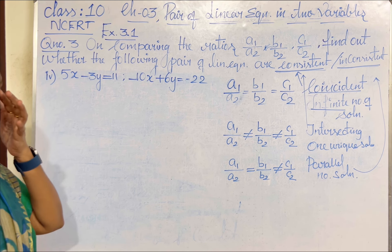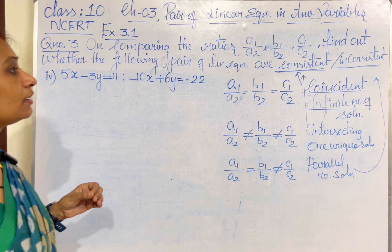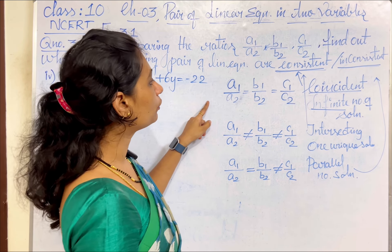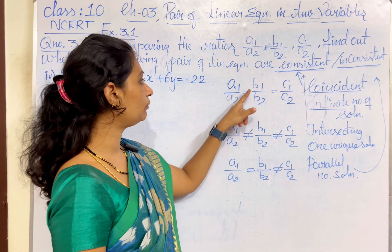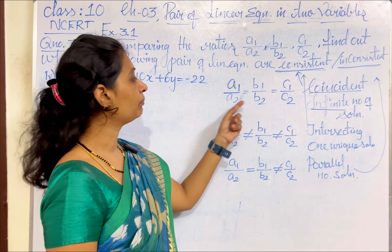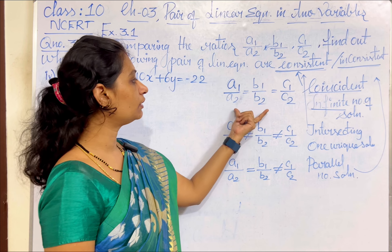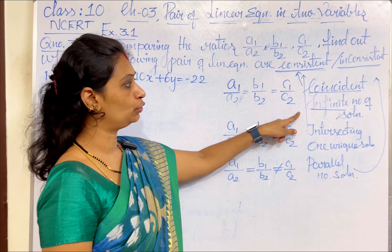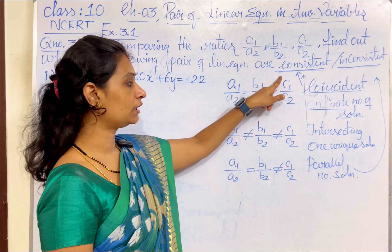From the given pair of equations, we need to analyze whether they are consistent or inconsistent. So, let me recollect what we have learned earlier. The given condition for coincident: A1 by A2 equal to B1 by B2 equal to C1 by C2. If all three ratios are equal, the given lines are coincident lines, which means they have infinite number of solutions. If they have solution, it comes under consistent.